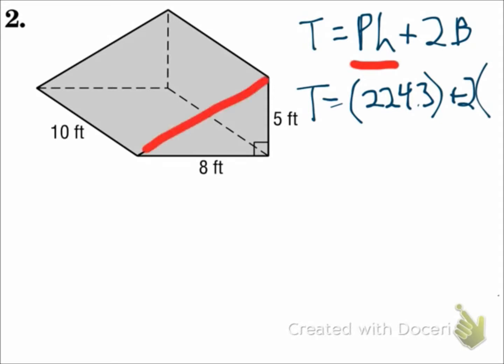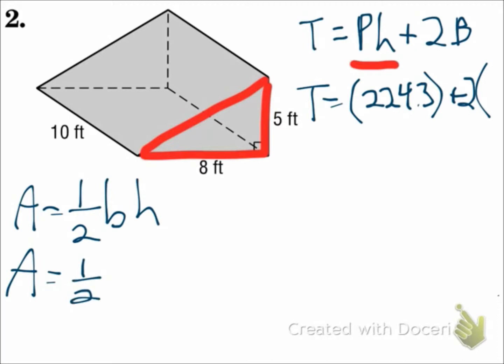In this one, the base is a triangle. For a triangle, area is one-half base times height. The base of the triangle is 8. The height of the triangle is 5. So the area of the triangle will be 20. That 20 is what goes in for big B. Remember, big B is the area of the base.